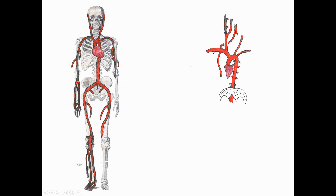Returning to the subclavian artery, we can see there are several branches ascending to take care of the neck and thyroid gland, as well as a branch descending towards the scapula. As the subclavian artery crosses the first rib, we change the name to become the axillary artery.